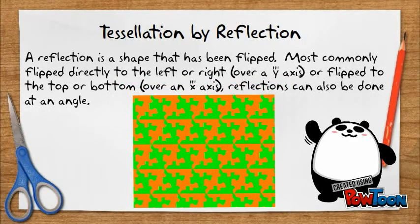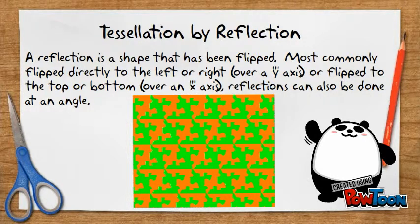Tessellation by Reflection. A reflection is a shape that has been flipped — most commonly flipped directly to the left or right, or flipped to the top or bottom. Reflections can also be done at an angle.